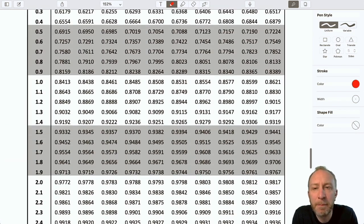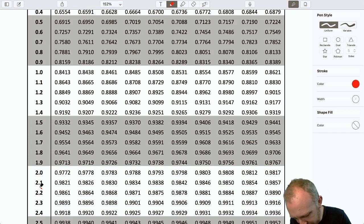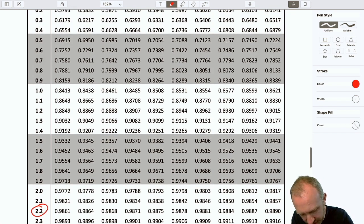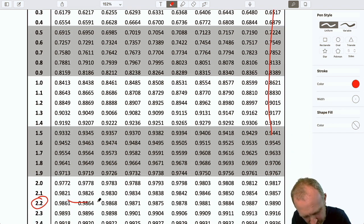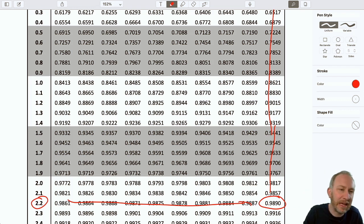Otherwise, if I look up positive 2.29, which I can do just fine. There's 2.2 and here's 9. And so I come down here. And I come over here. And again, it gives me a useful value. But that's not the one that I want. What I need is 1 minus 0.989. Because I want that upper tail value.